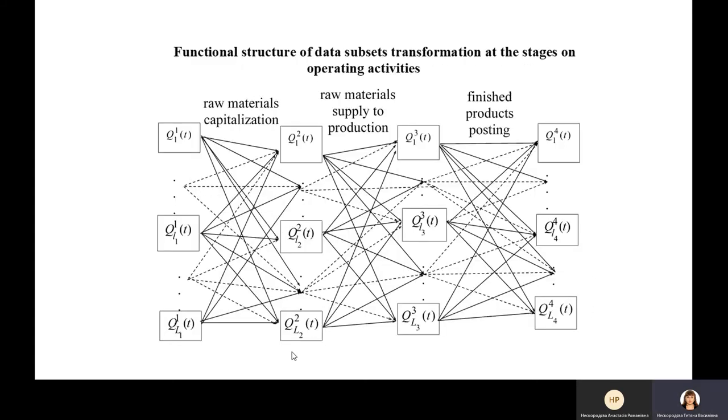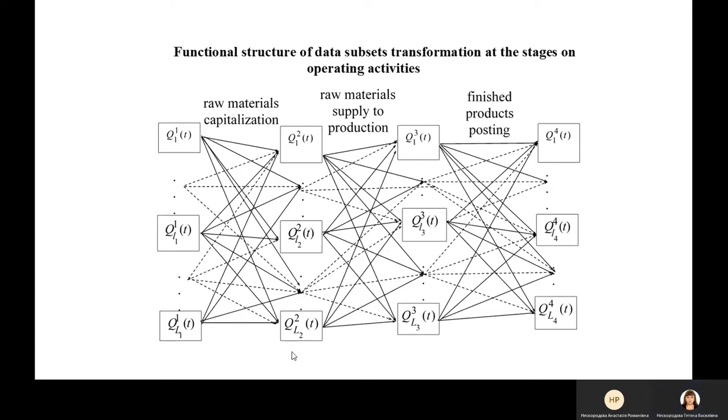The current slide presents functional structure of full data subset transformation at the stage of operating activities. As the current slide presents formal probable statements of full precondition compliance of expenses and income verification.